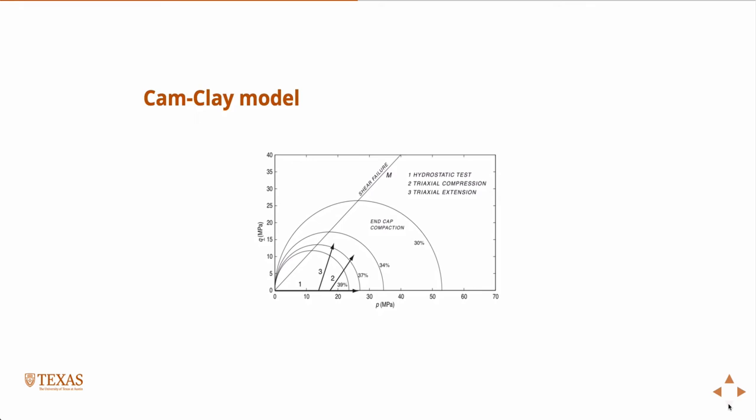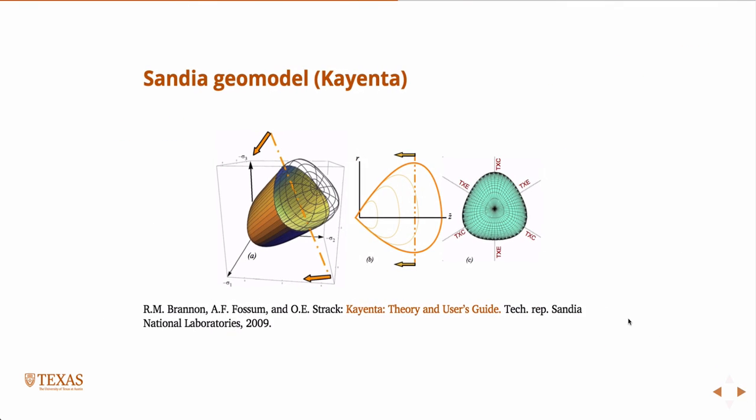So this would be the shear failure M, and then these were the ellipses that are fit via the Cam-Clay model. And these are the different, 1, 2, 3 represent the different loading paths. So one would just be a straight hydrostatic test. You're just squeezing the rock. A triaxial compression test would take you along this loading path. So you're squeezing the rock and at the same time applying an axial load. And then a triaxial extension test would take you along this line. So remember, triaxial extension is kind of a funny test because we actually compress it first, and we don't actually pull on it. We compress it first, and then we release the axial load. So you might call it like triaxial uncompression. We squeeze it first, then we release.